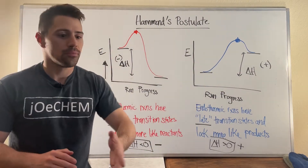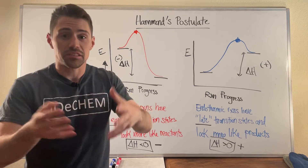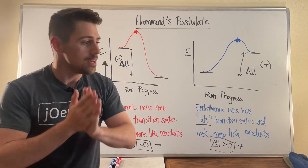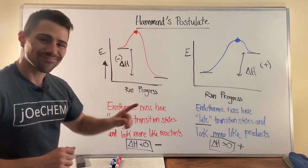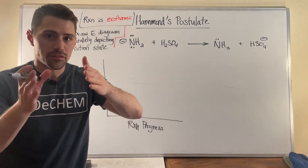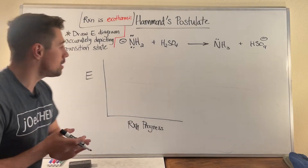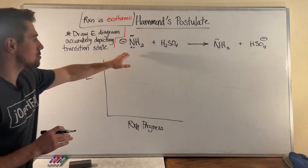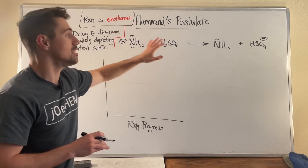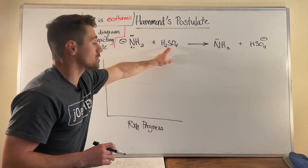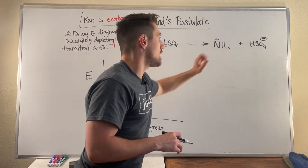I want to show just one example reaction to put this into more concrete terms. Given this reaction up here with NH2 minus coming into contact with H2SO4 — a very strong base and a strong acid — we see that this acid-base reaction results in a proton transfer from H2SO4 to NH2 minus to form the conjugate base of H2SO4 and NH3, or ammonia.